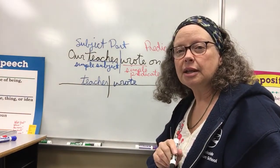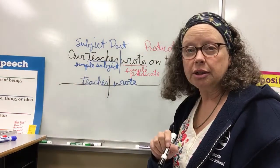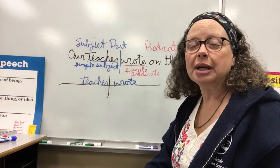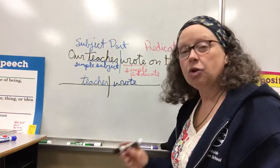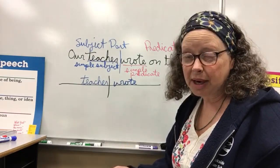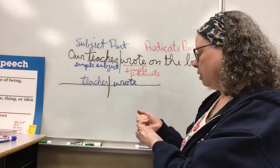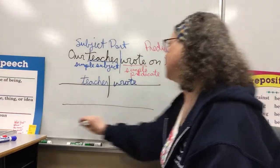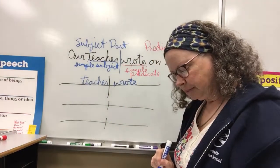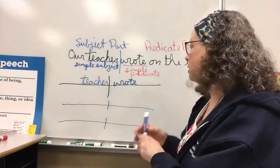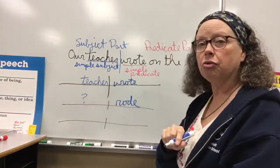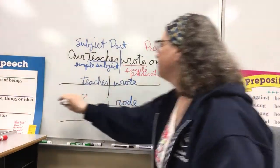If someone wrote 'rode a bike down the street,' that is missing who rode down the street, so that is a fragment — it doesn't have a subject. If someone wrote 'a dog named Spike' but it doesn't tell what Spike did, then that is a fragment. If I were to diagram those, I would put 'rode' right here where the verb goes in the predicate, but I don't know who rode, so if I don't have a who, that is a fragment.